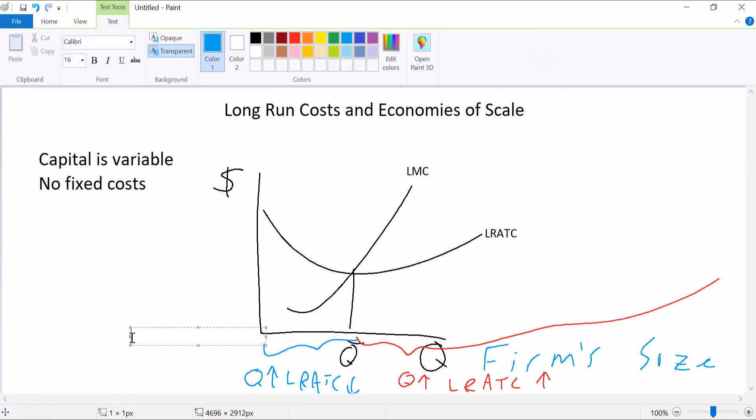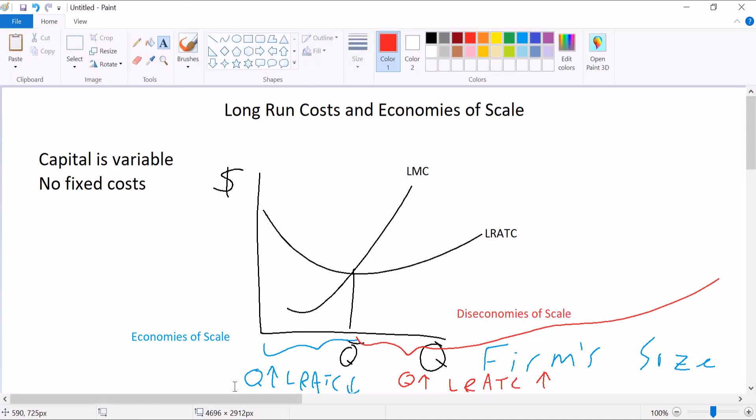So this blue range has a name. We call it economies of scale. And this red range also has a name. We call it diseconomies of scale. And how do we define these two things? By these relationships. If quantity goes up and long run average total cost is falling, everything left of this point right here, that is experiencing economies of scale, meaning that bigger firms will have lower average total cost.